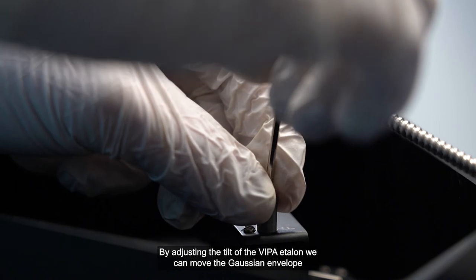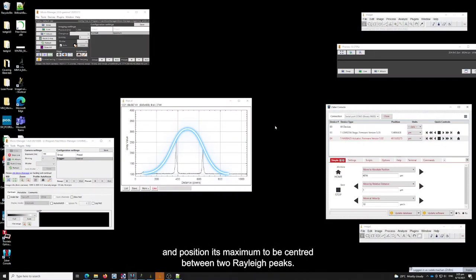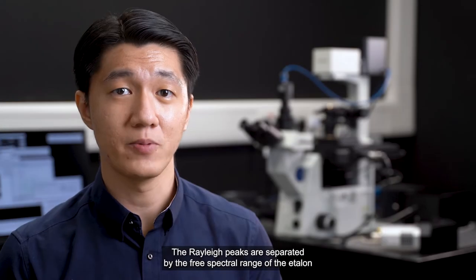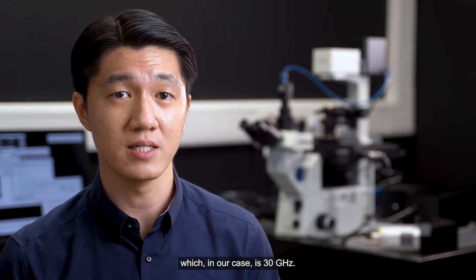By adjusting the tilt of the VIPA etalon, we can move the Gaussian envelope and position its maximum to be centered between two Rayleigh peaks. The Rayleigh peaks are separated by the free spectral range of the etalon, which in our case is 30 gigahertz.